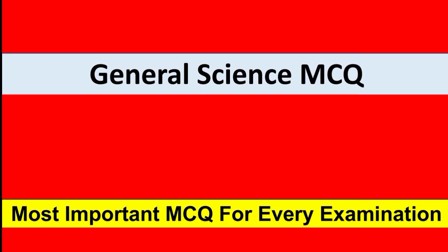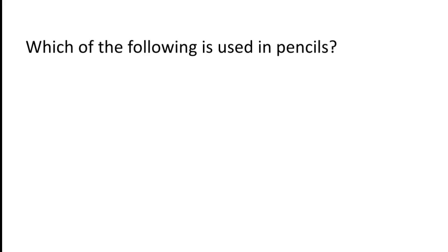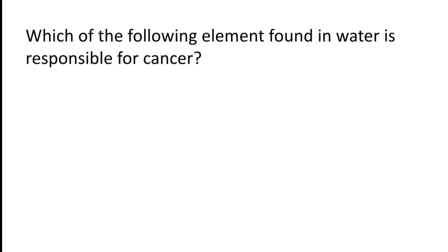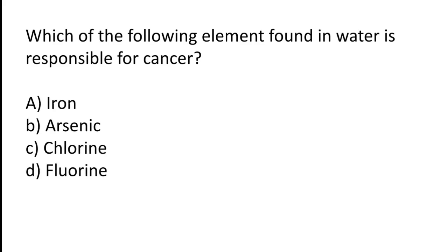Which of the following is used in pencils? Options: phosphorus, silicon, uranium, graphite. The correct answer is option D — graphite is used in pencils.